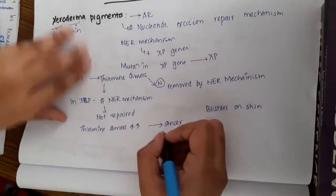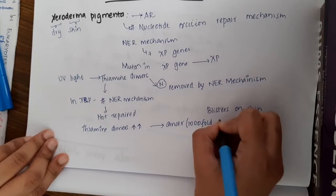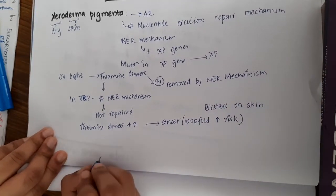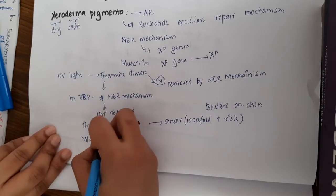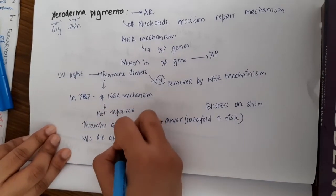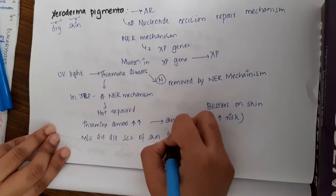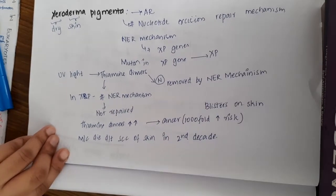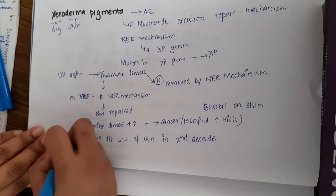They have almost 1000-fold increased chances or risk of developing cancer in these patients with xeroderma pigmentosa. Most commonly they die due to squamous cell carcinoma of skin in their 20s or in their second decade of life.